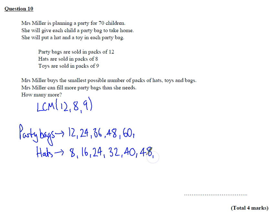48. Now that would normally be okay, but because I need toys as well, 24 is actually the first time that 8 and 12 get together, and then 48. If we do the 9s, neither of those are in the 9 times table. 36, 45, 54, 63, 72.